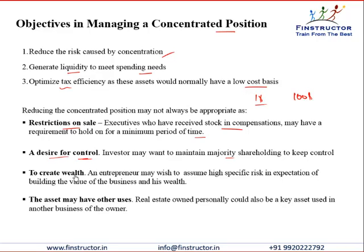An investor may not want to diversify if he is confident that this investment will give him the best possible returns in the future — he wants to create wealth but does not want to sell out this concentrated position. The asset may also have other uses; for example, if it is real estate, it could be a key asset used in the business of the owner, or the owner or relatives may be living there, making him unable or unwilling to sell at the moment.